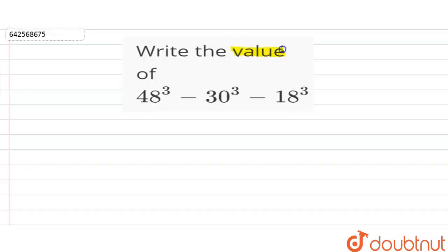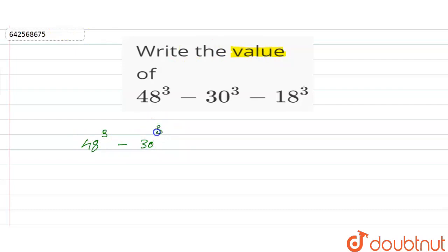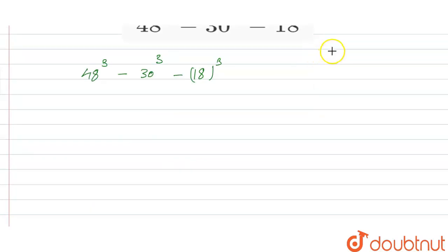We have to find the value of the given expression: 48³ minus 30³ minus 18³.